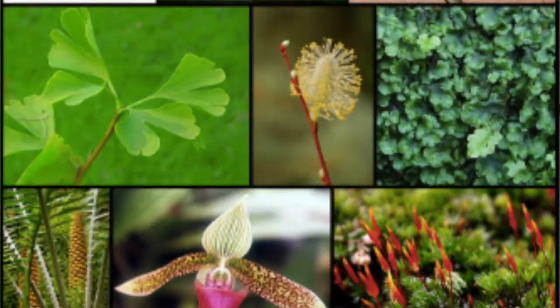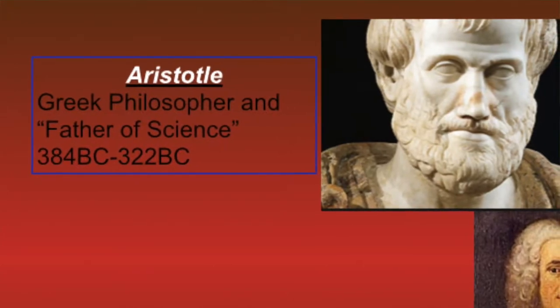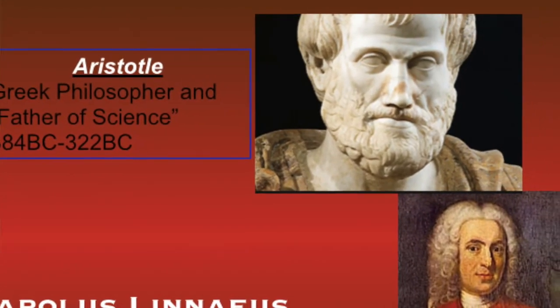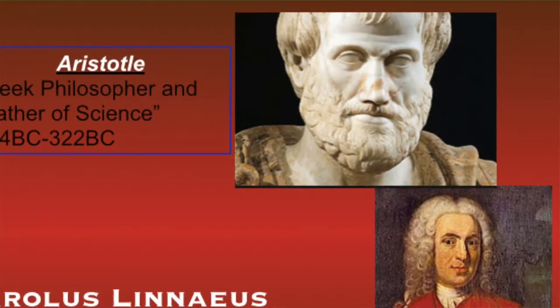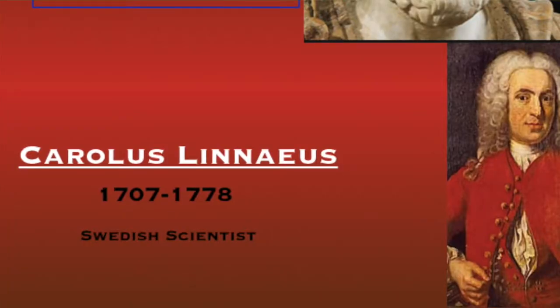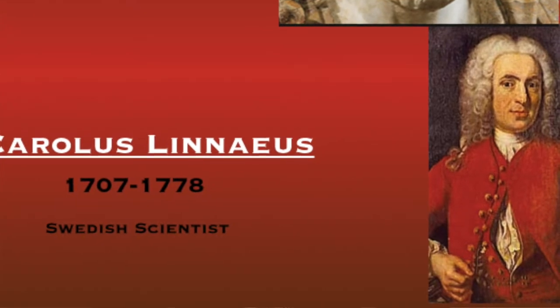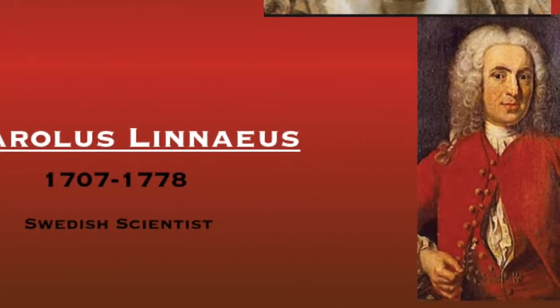Two main people in history helped us set up this classification. The first one is Aristotle, who lived 384 to 322 BC. He was a Greek philosopher, often called the father of science. He was not a scientist — he was a philosopher — but in being a philosopher, he became one of our first official scientists. The other one is Carlos Linnaeus, a Swedish scientist who lived in the 1700s. Both of these men helped to outline, organize, and give us the founding criteria for classification that we still use today.